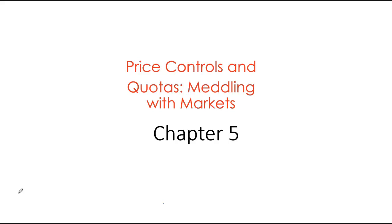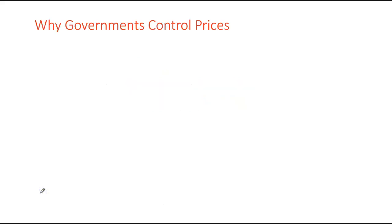Hello everyone, welcome back. Today we are doing chapter 5 of our textbook, Microeconomics by Krugman, Wells, and Parkinson. This chapter is essentially about price controls and quotas — what are essentially quantity controls — and this is when the government starts interfering in our market outcome. Last time in chapter 4 we saw that at equilibrium total surplus is maximized, which is our efficient outcome.